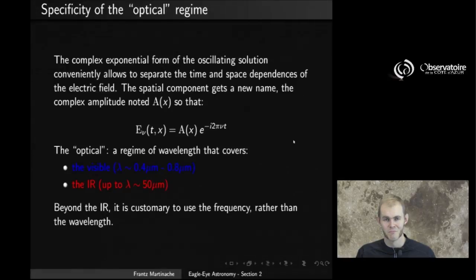Now, light is different than water in some respects, and particularly in the regime that interests us, which is what we call the optical. We've seen that the exponential form of the oscillating solution allows us to split it into two components of time and spatial dependence. So just for reference, we're going to isolate the spatial component and give it a new name. We're going to say that the electric field is going to be the product of a new function A, which is only a function of space, which is going to be called the complex amplitude, and a time dependence term.